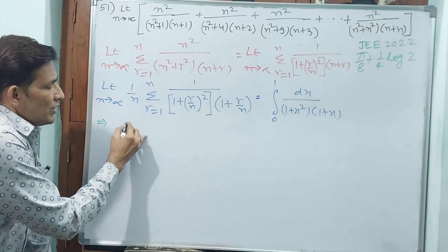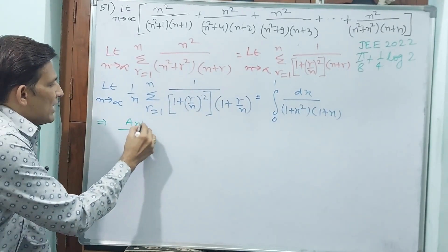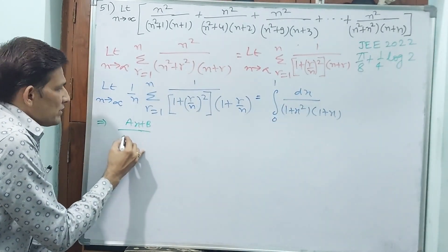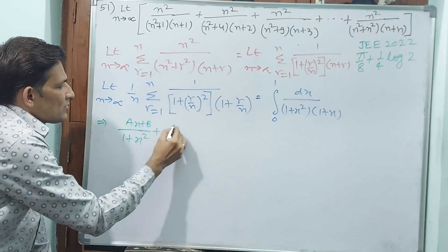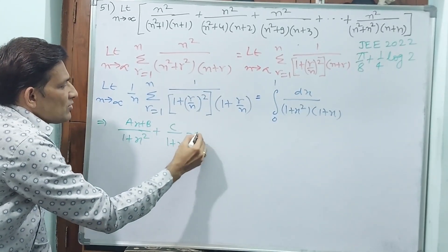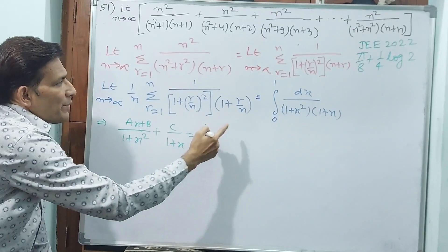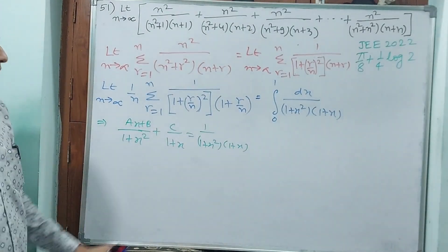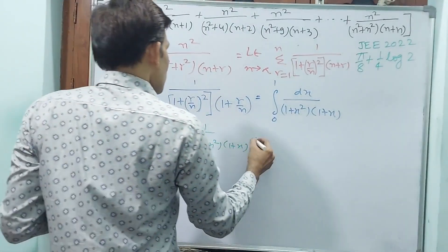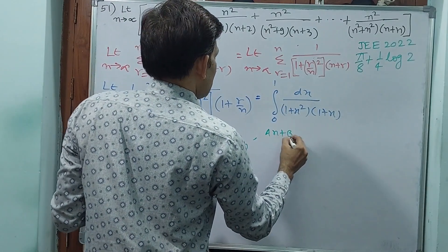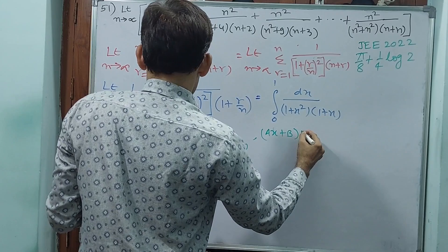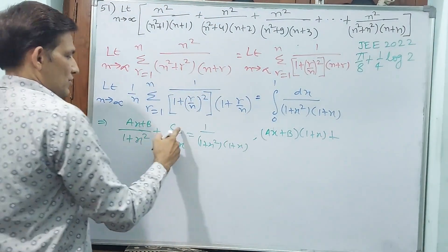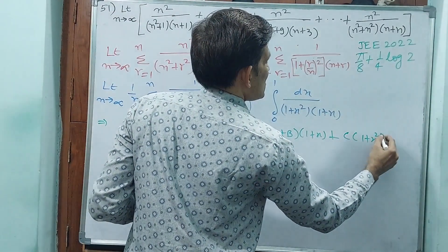In partial fractions: when quadratic is there, linear has to come. So (ax plus b) by (1 plus x squared) plus c by (1 plus x) equals 1 by (1 plus x squared) into (1 plus x). Cross-multiplying: the numerator is 1, so (ax plus b)(1 plus x) plus c(1 plus x squared) equals 1.